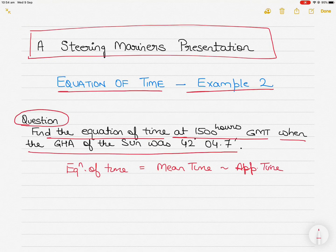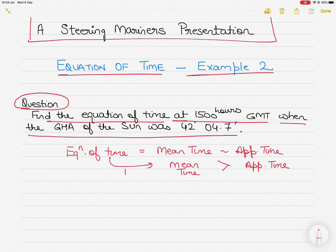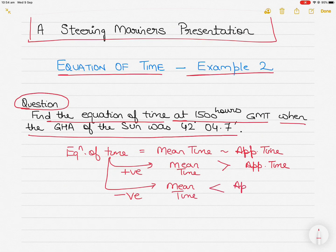It is termed positive if mean time is greater than apparent time — so if mean time is greater than apparent time, the equation of time is positive. The equation of time would be negative if mean time is less than apparent time — if apparent time is more, then the equation of time is termed negative.